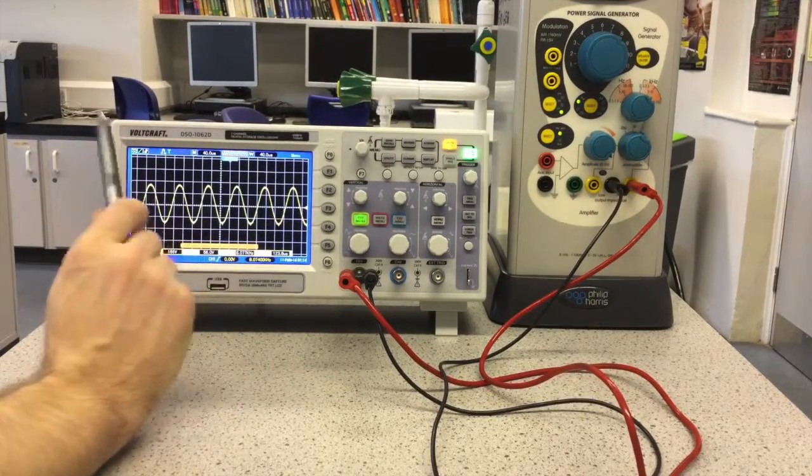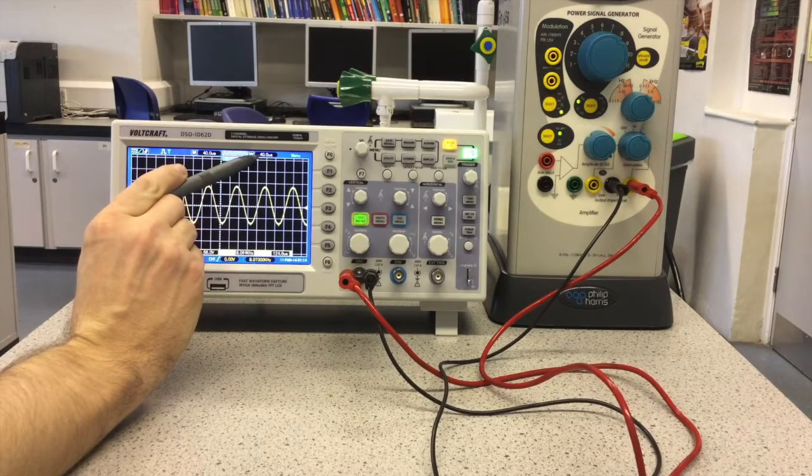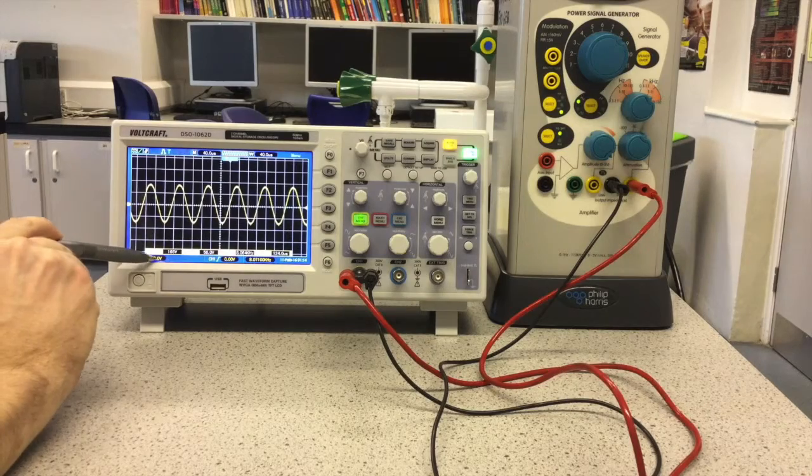For example, the time-based setting is shown up here, 40 microseconds, and the Y-gain setting is shown up here, 50 volts per division.